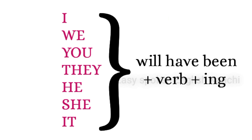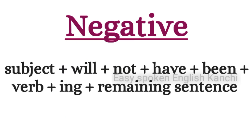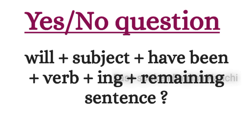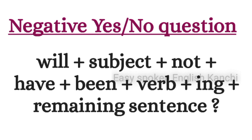The structure is: Subject + will + have + been + verb-ing. That is the general affirmative structure. For negative: Subject + will not + have + been + verb-ing + remaining sentence. For yes/no questions: Will + subject + have + been + verb-ing + remaining sentence? For negative yes/no: Will + subject + not + have + been + verb-ing + remaining sentence?